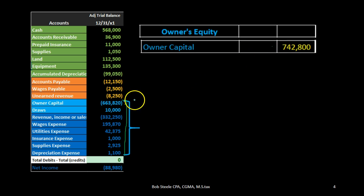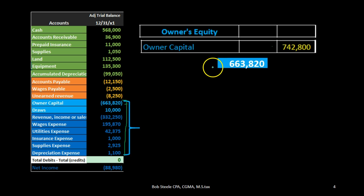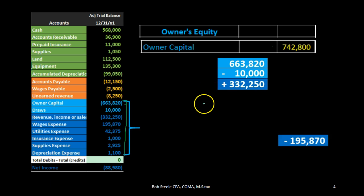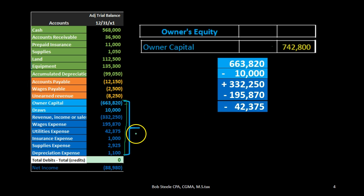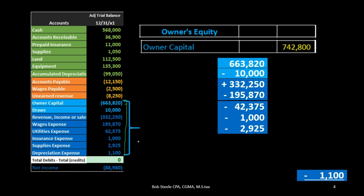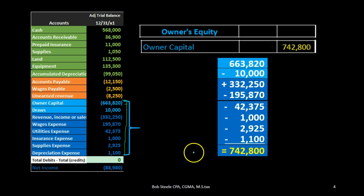You can also think of it as the capital account section — the light blue section of 663,820 minus the draws, then simply add net income. Or we can list it out in the equity section as owner's capital as a positive number, subtract out draws, add revenue, then subtract wages, utilities, insurance expense, supplies, and depreciation. All we're doing is summing credits minus debits — the things that increase total equity minus the things that decrease it — to get 742,800.